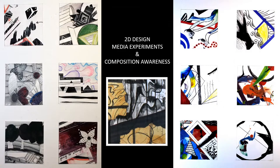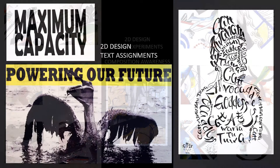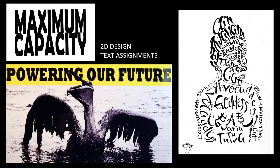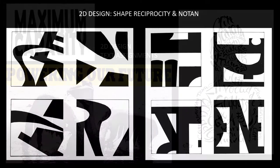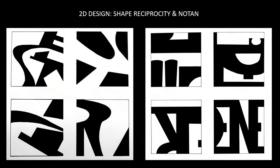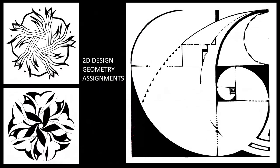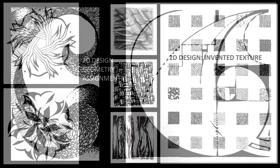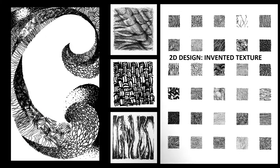The best way to learn the elements and principles of design is through abstract imagery. Utilized text is an important tool in any artist's toolbox. Seeing the graphic impact of bold design, rational geometry becomes the foundation for composition. Complex texture becomes a surrogate for value.